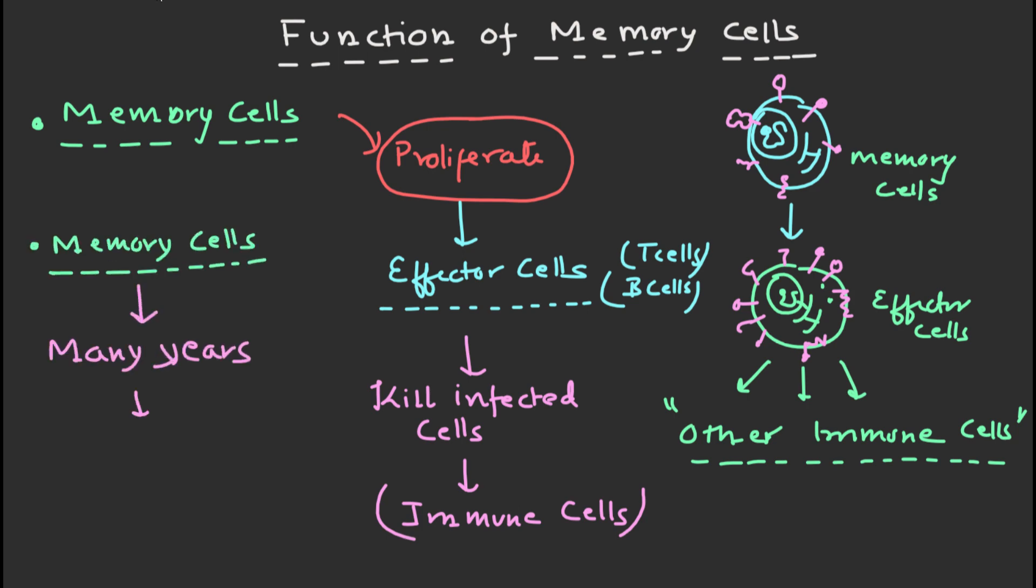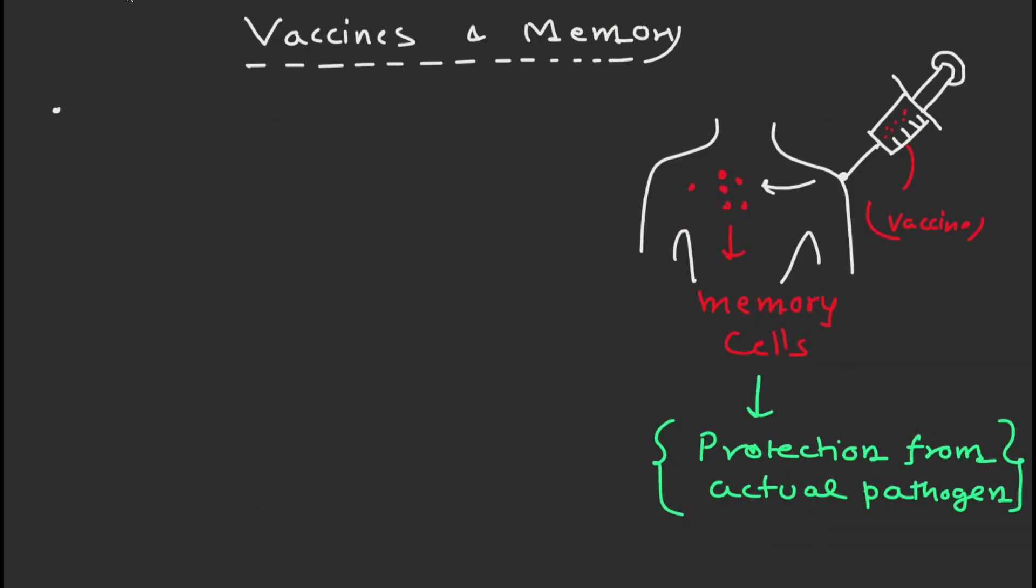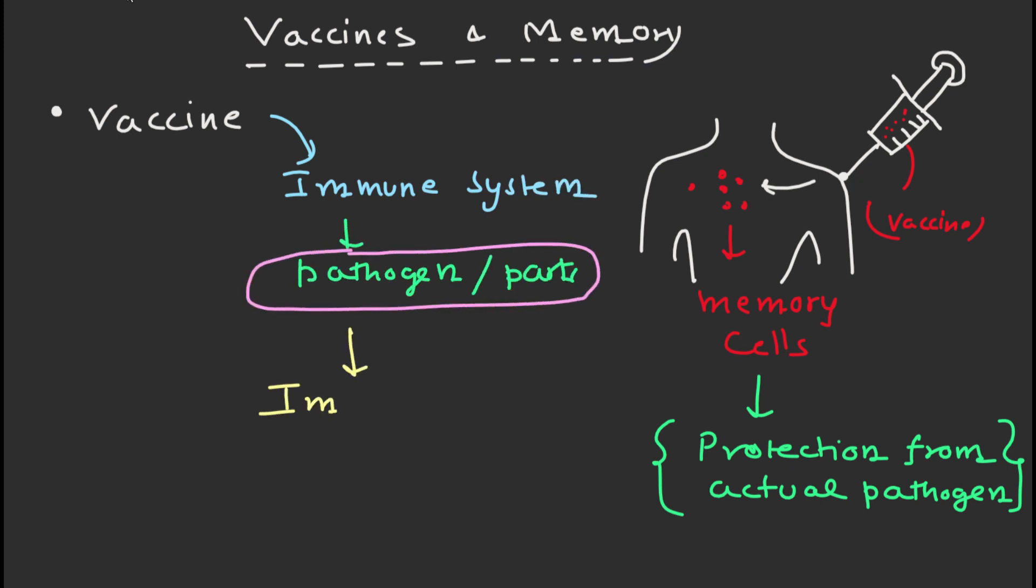This is why vaccines, which contain weakened or killed pathogen or parts of them, can provide immunity to infectious diseases. When we receive a vaccine, our immune system is exposed to the pathogen or parts of it without causing disease. This triggers an immune response and the production of memory cells, which can provide protection against future infections with the same pathogen.